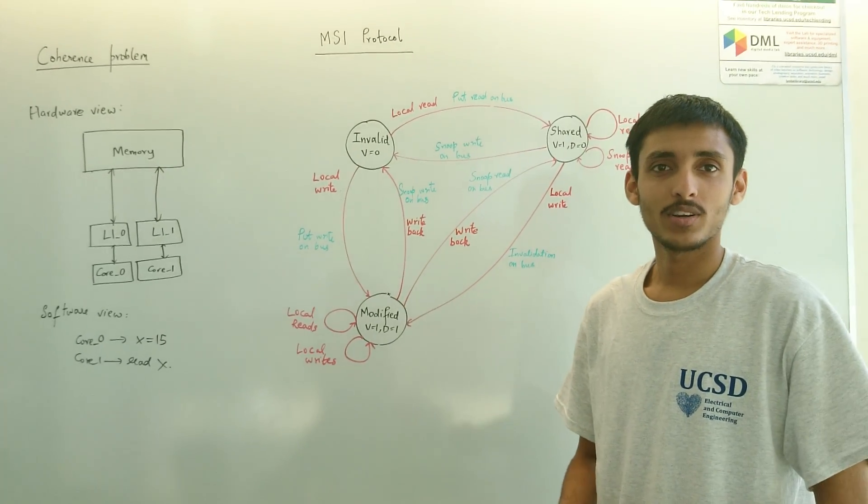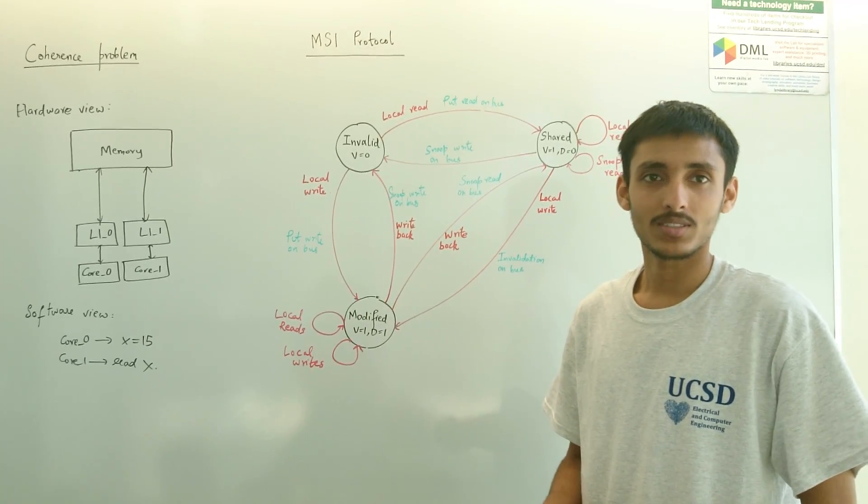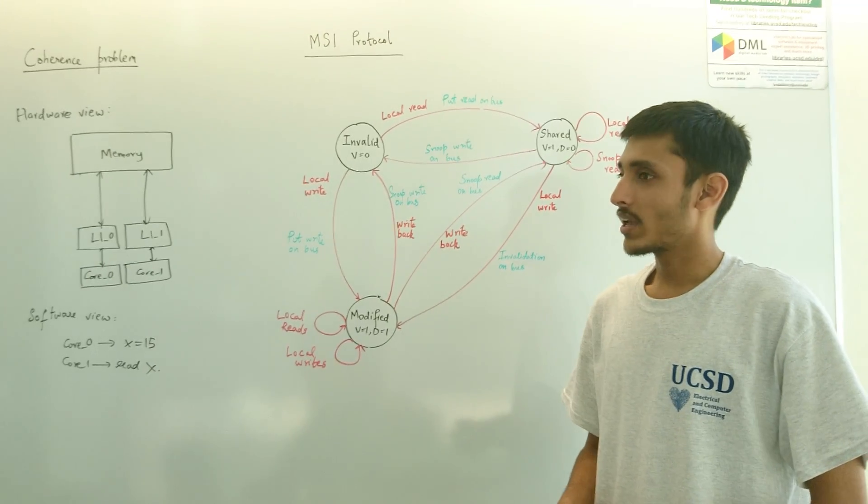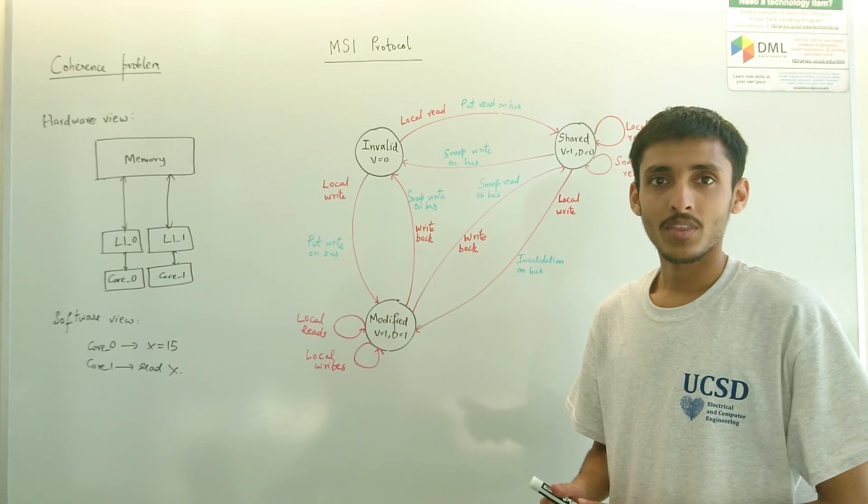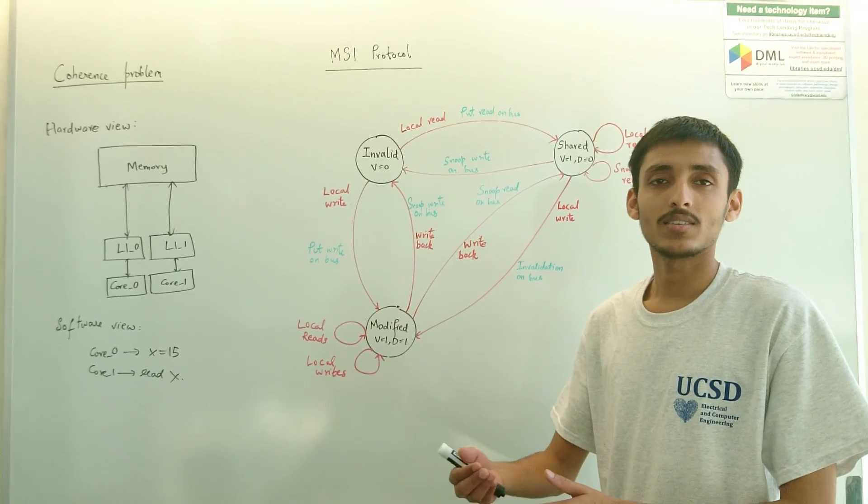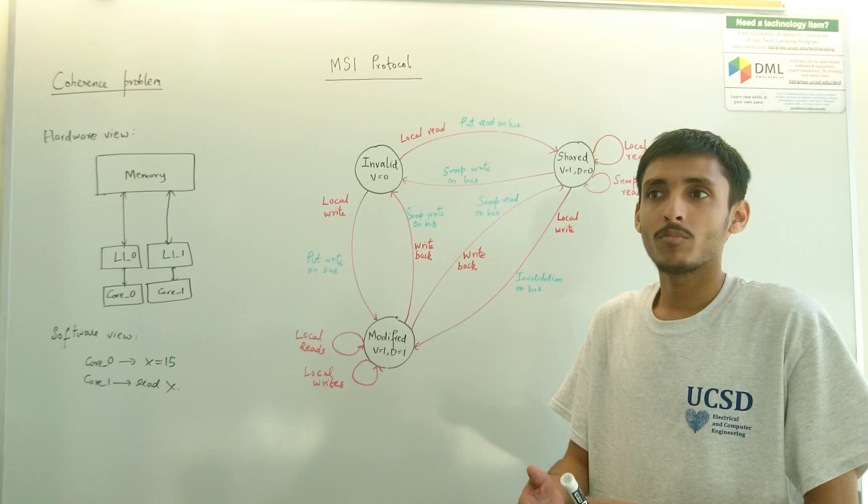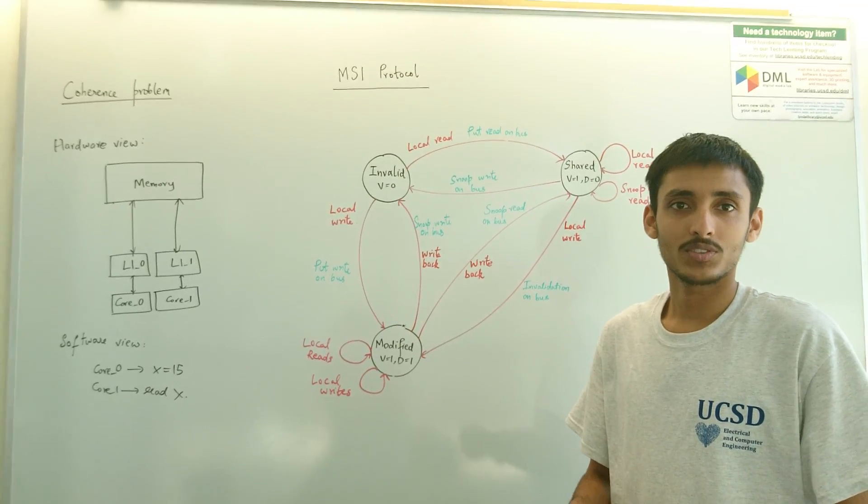Today I will talk about the cache coherence problem in a multi-computer system. In a multi-computer system you generally have one unified memory and multiple processors accessing the same memory. This could have a problem when we want to share data across the two processors.